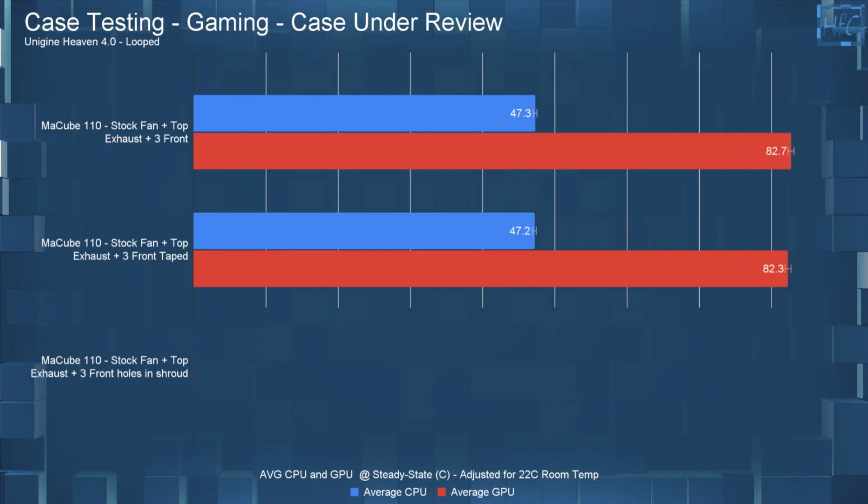So only a 0.1 Celsius difference for the CPU and less than a 0.5 Celsius difference for the GPU which means they're within margin of error and almost the exact same which is good.